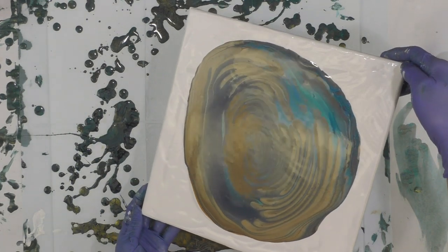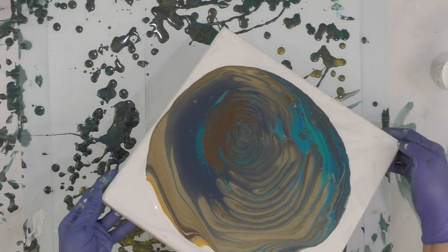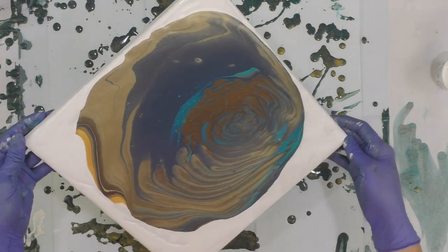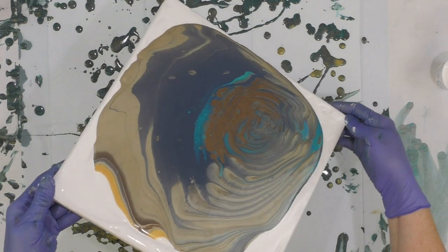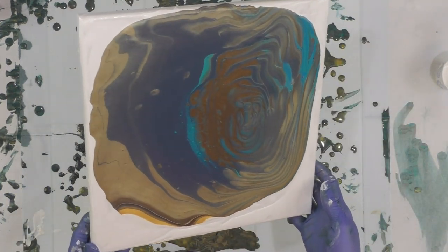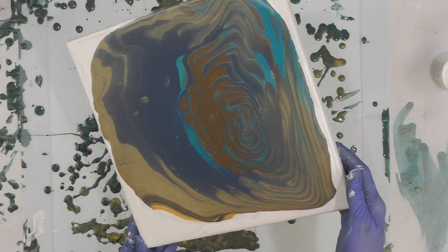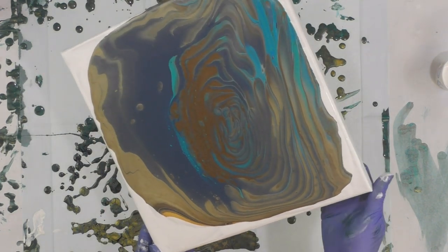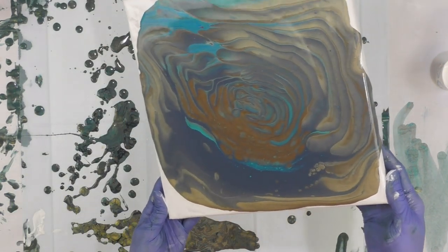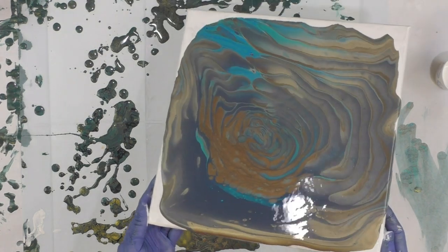I'm basically just circling around just to get the paint to pretty much cover most of the surface, and then I'm going to tilt it off.